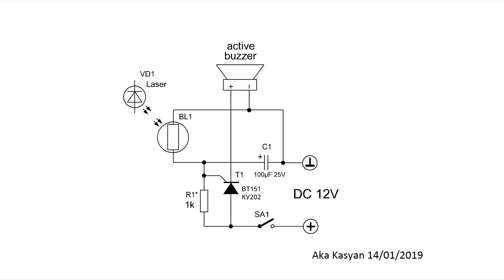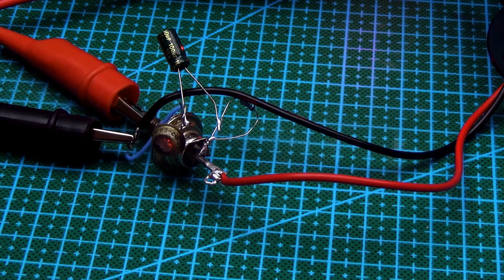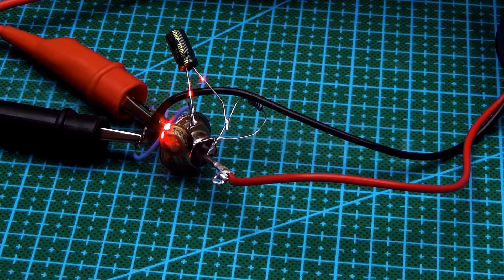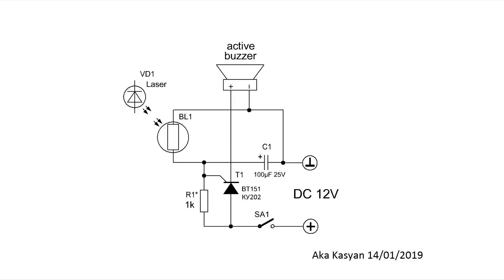The next circuit is based on the first one. Only the wire is replaced with a photoresistor and an electrolytic capacitor is added. As a result, we get a laser alarm system. The operating principle is as follows. We direct the laser at the photoresistor. We supply power to the circuit.